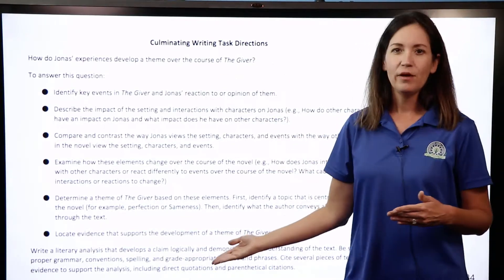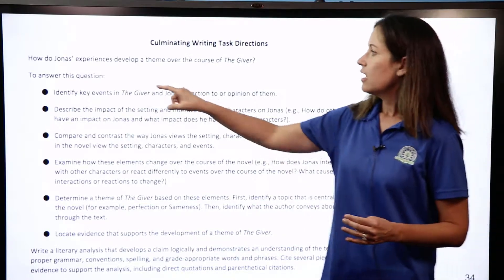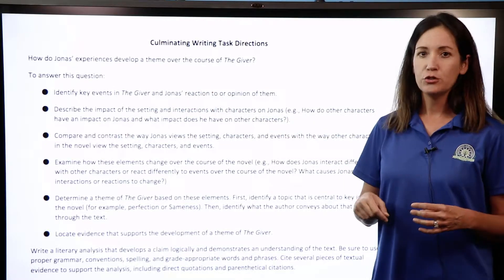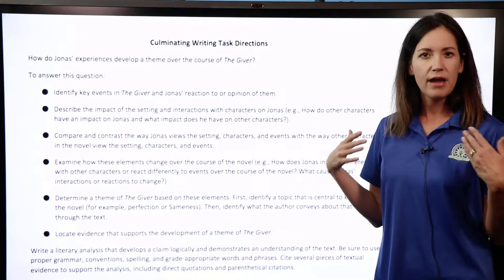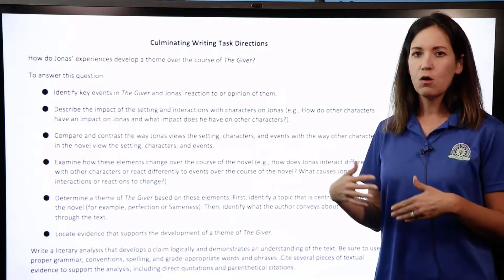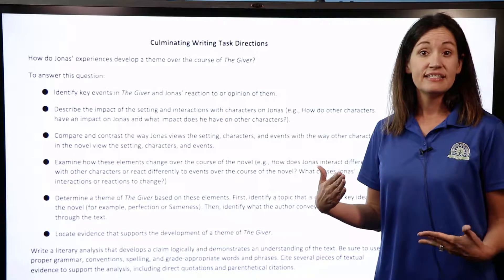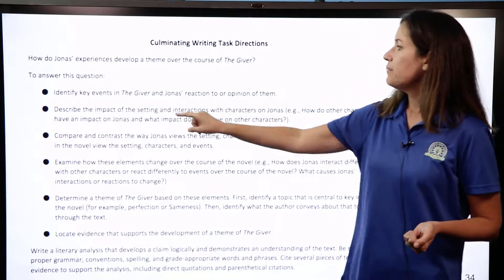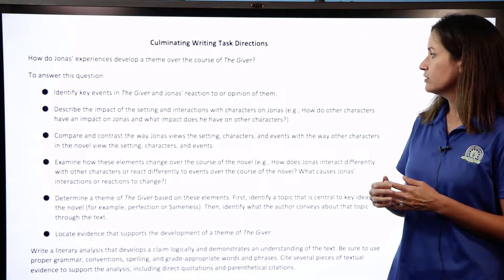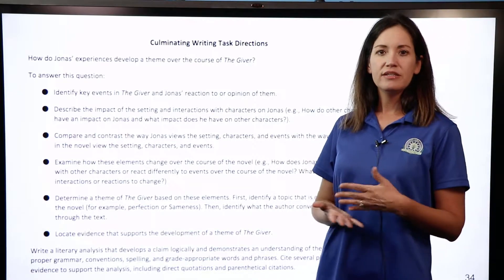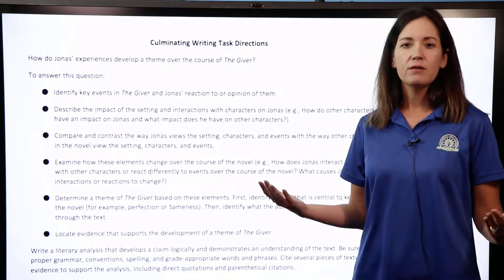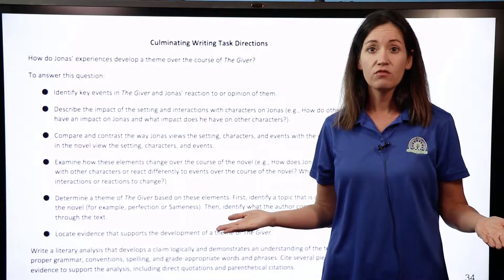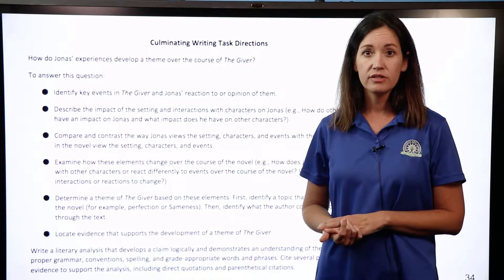To answer this question you need to examine these key points: identify key events in The Giver and Jonas's reaction to or opinion of them — for example, how Jonas views the concept of release. Also describe the impact of the setting and interactions with characters on Jonas, such as his family unit, his friend Fiona, Asher, or even the Giver himself.